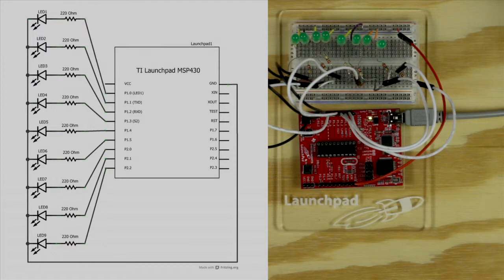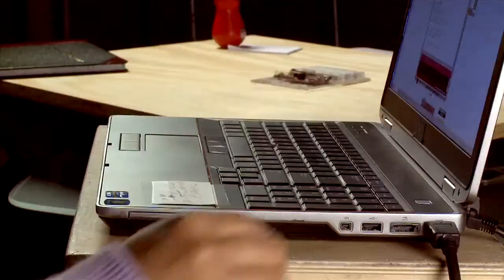Rig up the circuit as shown in the schematic. Connect one end of all LEDs with 220 ohm resistors in series to digital pins 2 through 10 on your launchpad, and connect the other ends to ground.